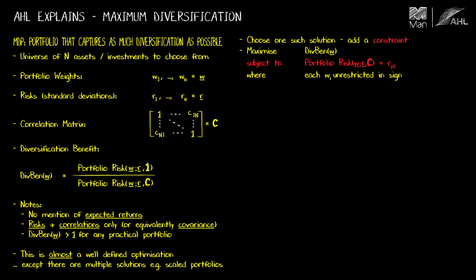I'm only interested in solutions that satisfy the constraint that the portfolio risk evaluated with correlation matrix C is this constant value RPF. I've done that because that's exactly the expression that you find in the denominator of the diversification benefit formula, so where I have that I can replace it with this constant RPF. Since the denominator is constant, in order to maximize the diversification benefit as a function of W, I only need to maximize the numerator in that fraction now, which is the portfolio risk assuming that all of the correlations are identically equal to 1. In other words, it tells you to add up the weighted sum of the risks.